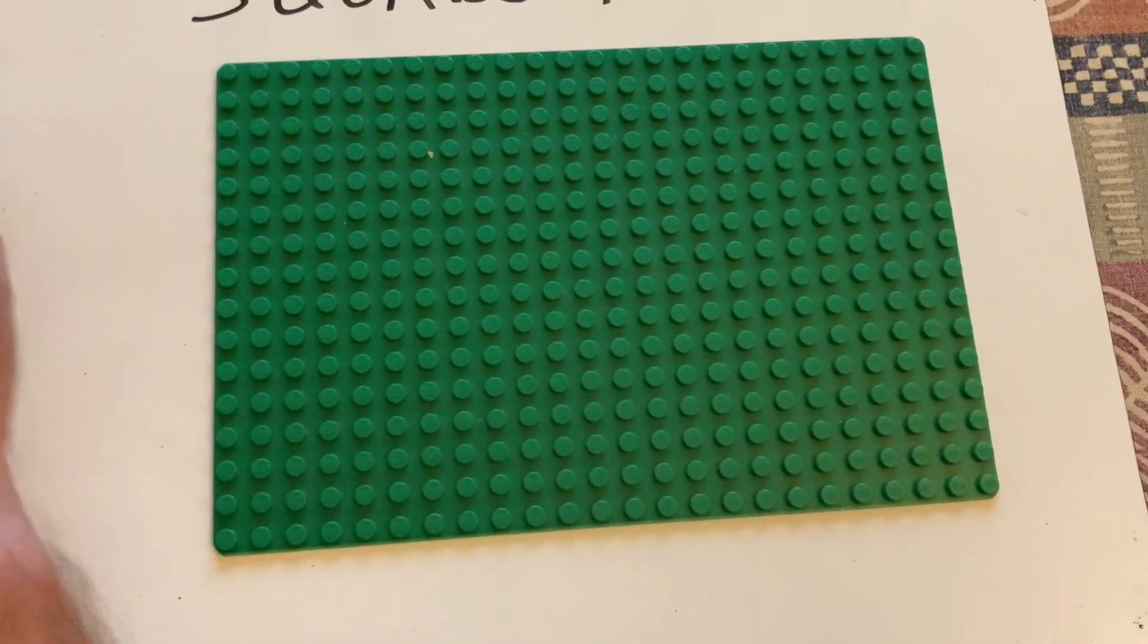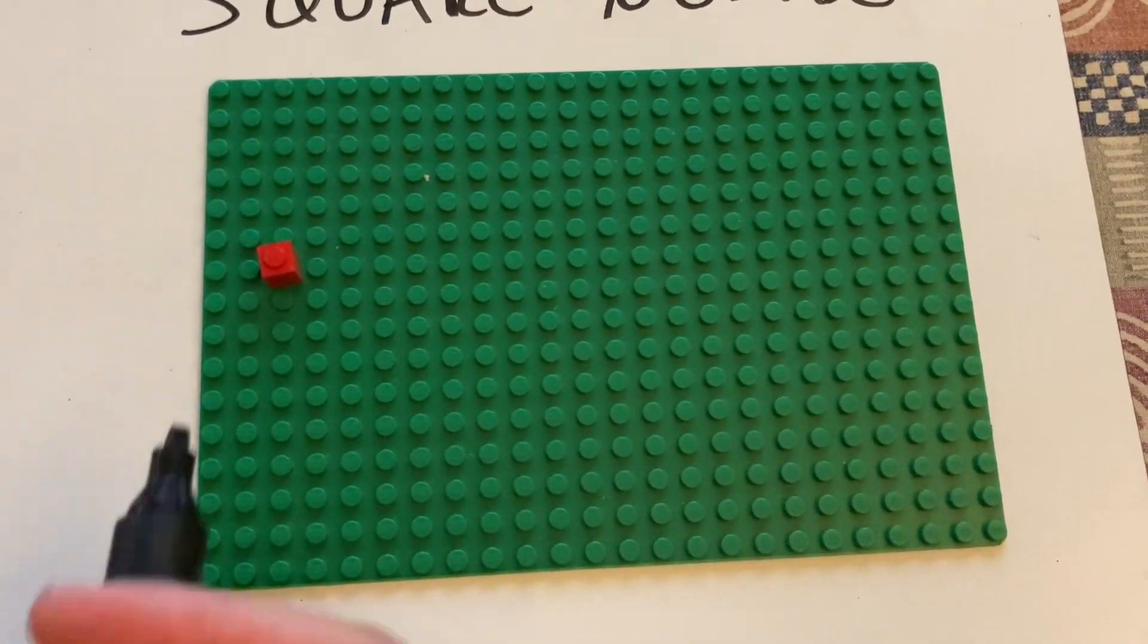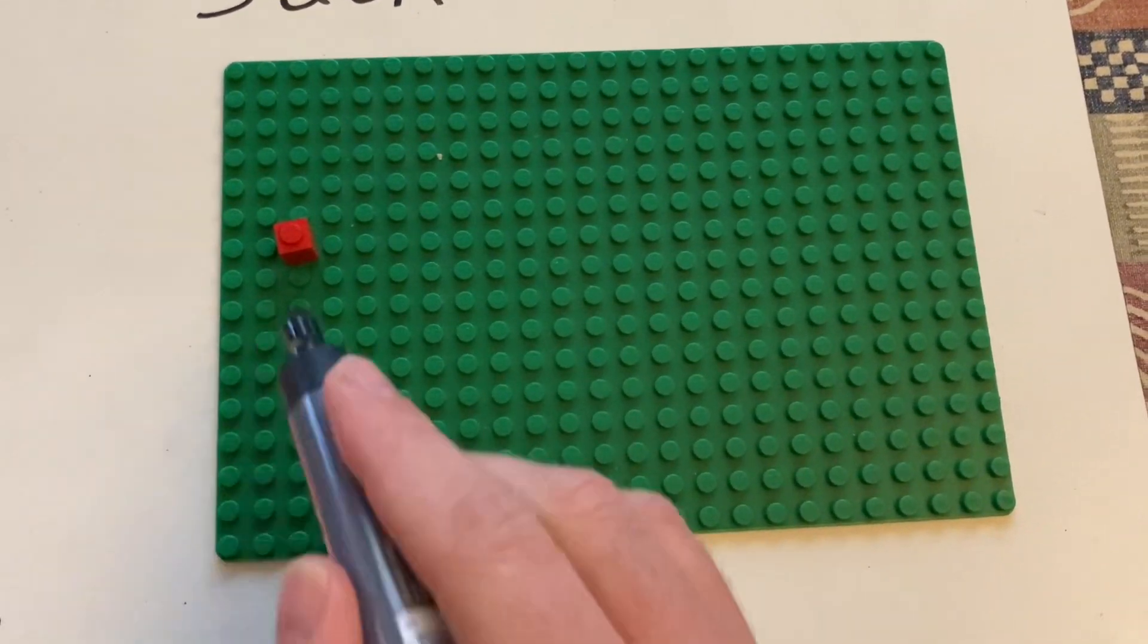So what's the first square number? One times one, which is one. One, because you've got one times one.